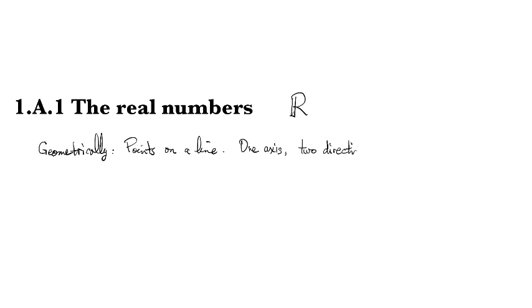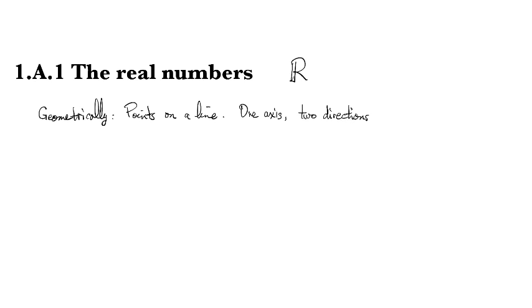If we look algebraically, then we see that we've got a set which is closed under addition and multiplication. So this is describing it in terms of its operations. It's closed - if you add two real numbers together you get another one, if you multiply two real numbers together you get another one. But this is not true for taking roots.